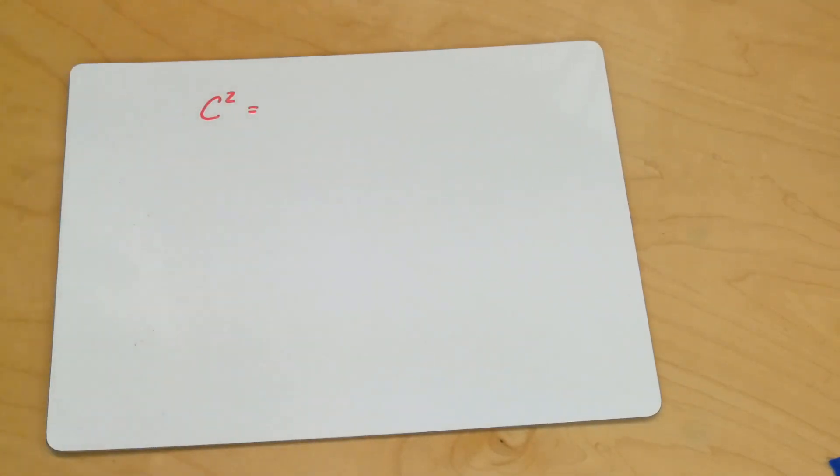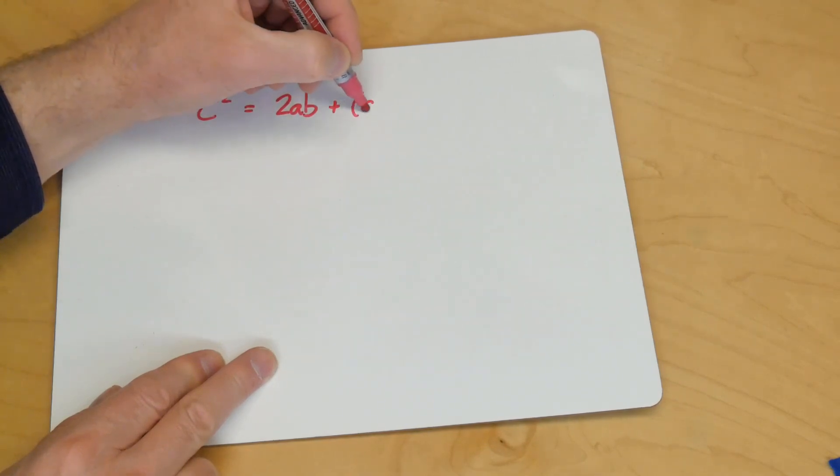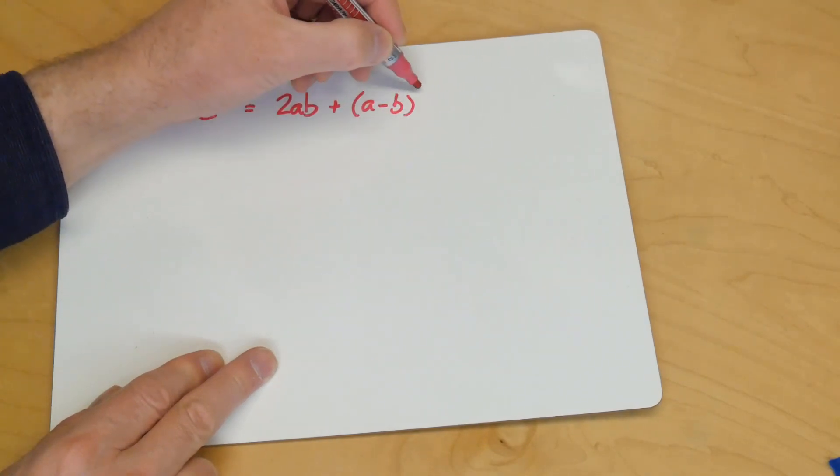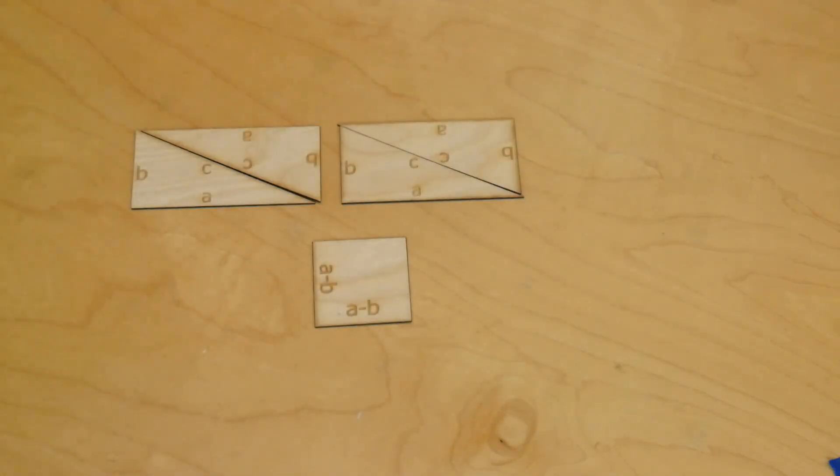So, let's see. c squared is the area of the big square that we made. Well, the pieces, the area of those are 2ab plus a minus b squared. And we know they're the same because those pieces made that big square.